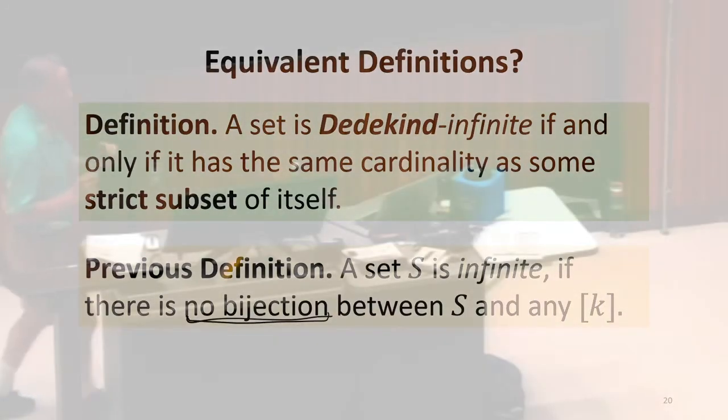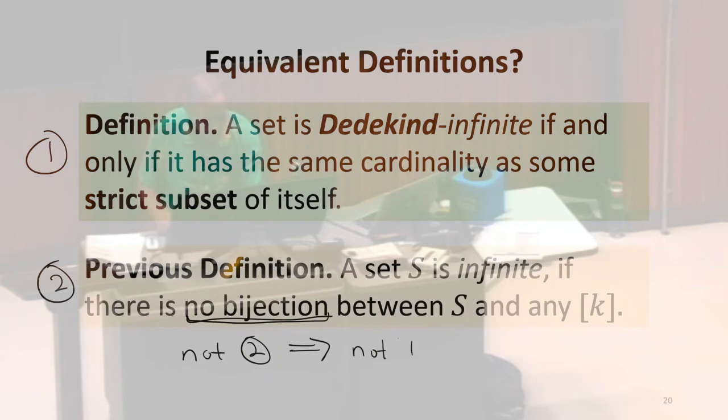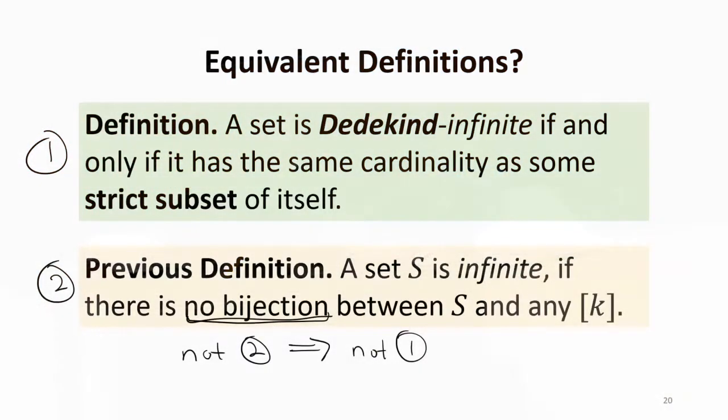So what we would need to do to show... So we have our two definitions. We have to show not two also implies not one. That's one direction we would have to show. We'd have to show the other direction and we have to show the positive directions as well. If you could show those four separate things, we would show the definitions are equivalent. So we're not going to do all four, but is this one easy to do?